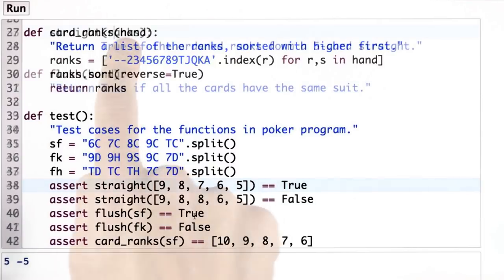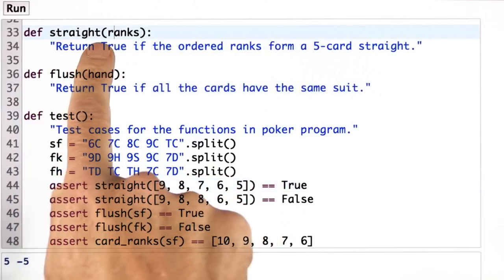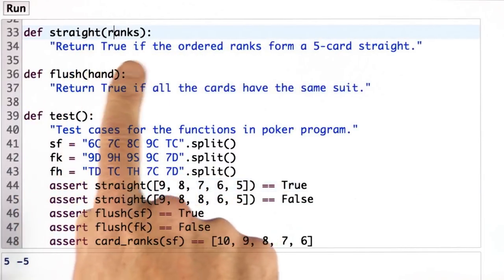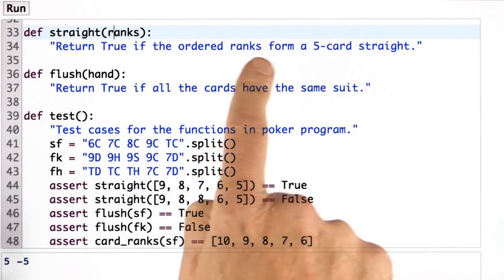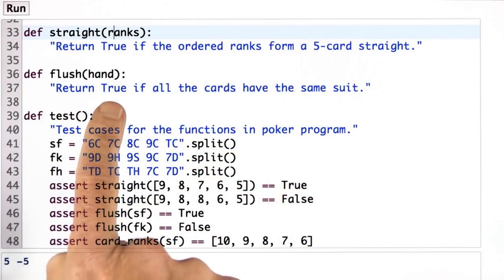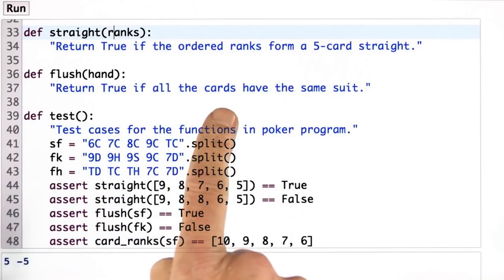Now I've written the tests. Now it's your turn to write the code. I want you to write straight, which should return true if the ordered ranks form a five card straight and false otherwise. And flush, which should return true if all the cards in the hand had the same suit and false otherwise.